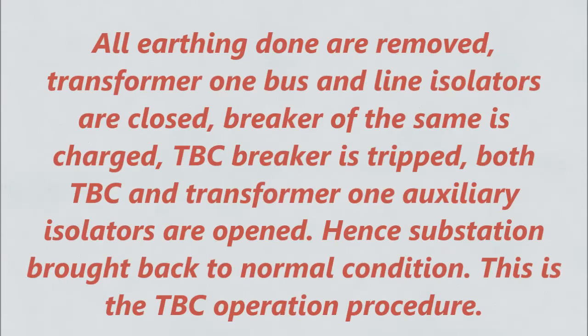That is, all earthing done is removed, transformer one bus and line isolators are closed, breaker of the same is charged, TBC breaker is tripped, and both TBC and transformer one auxiliary isolators are opened. Hence the substation is brought back to normal condition.